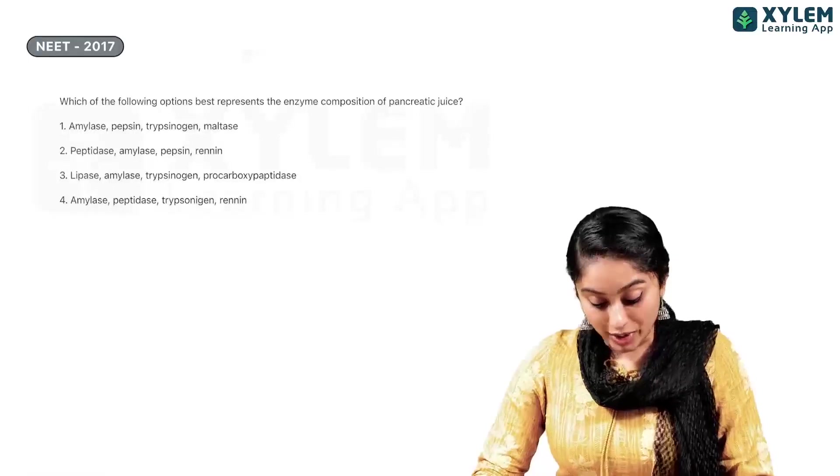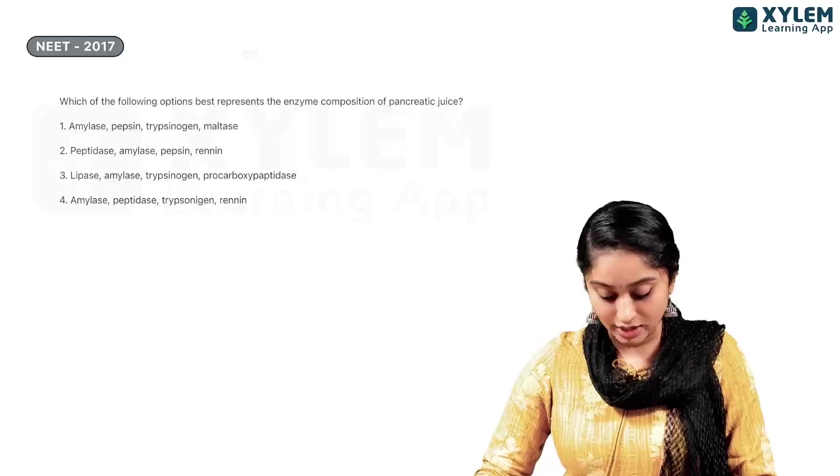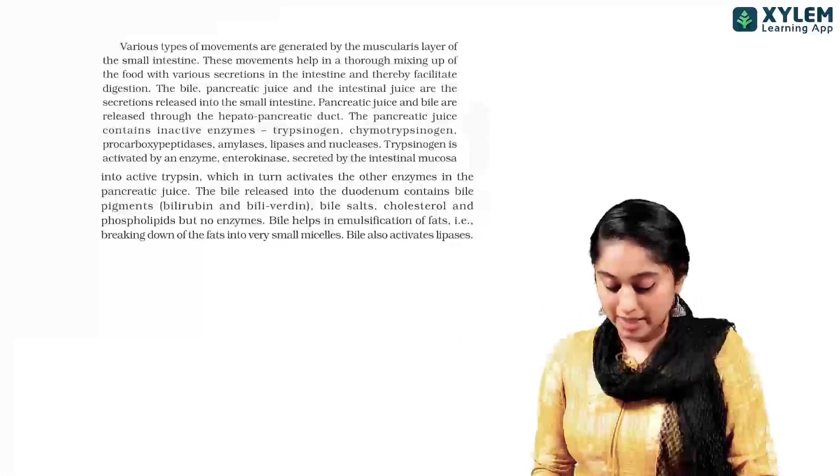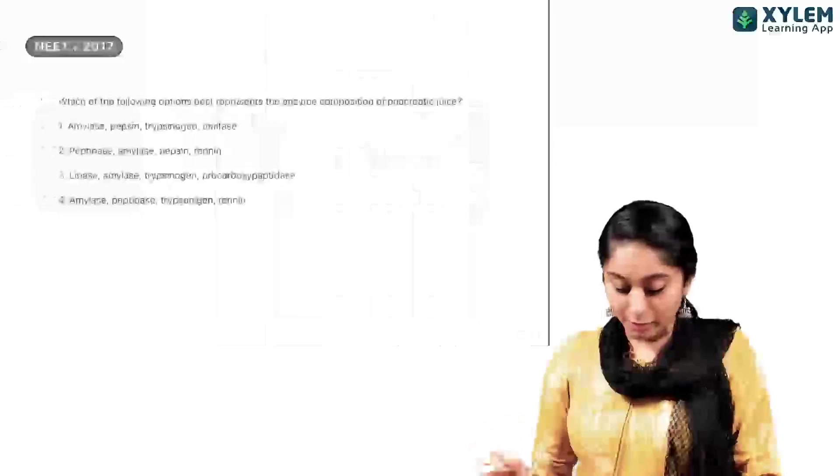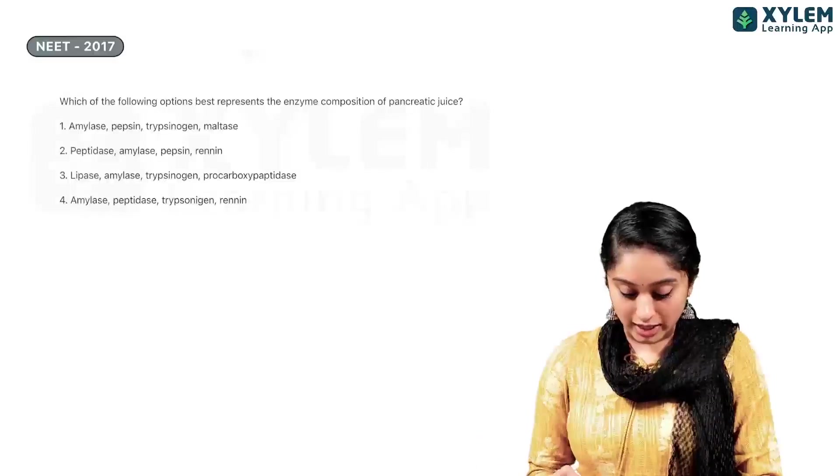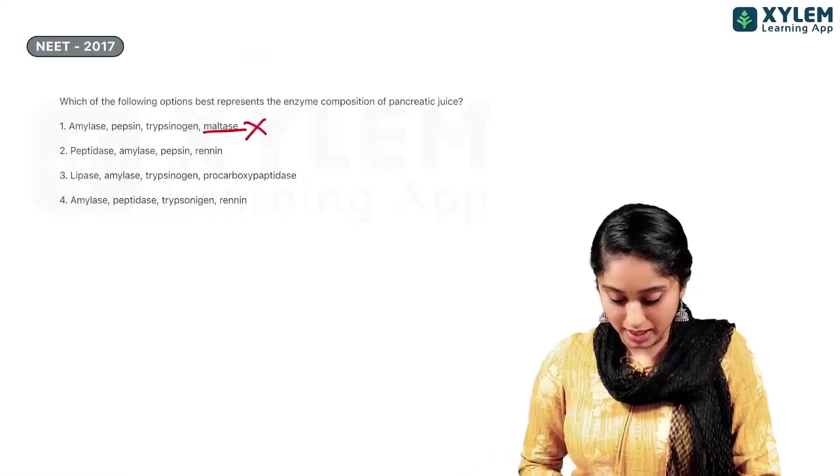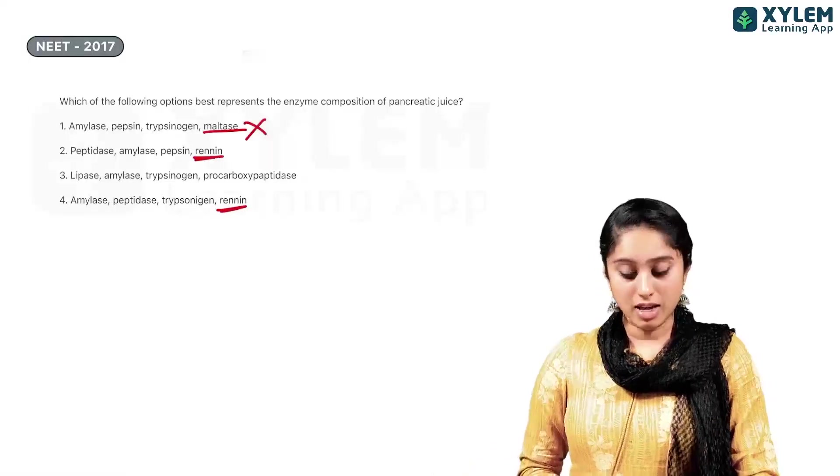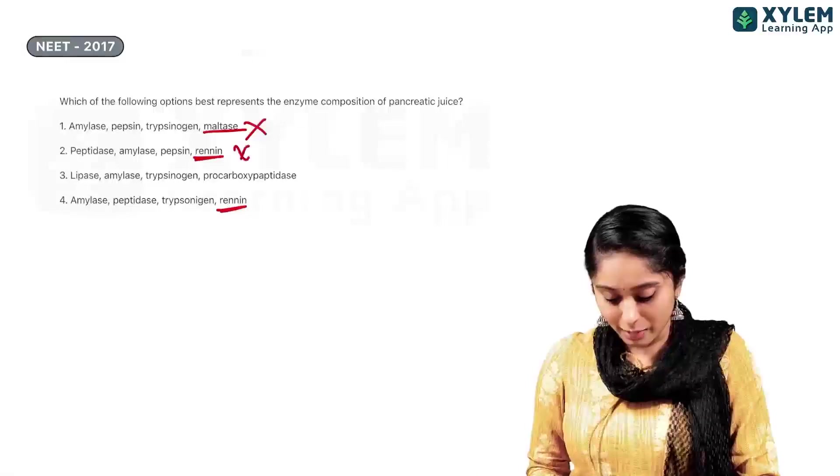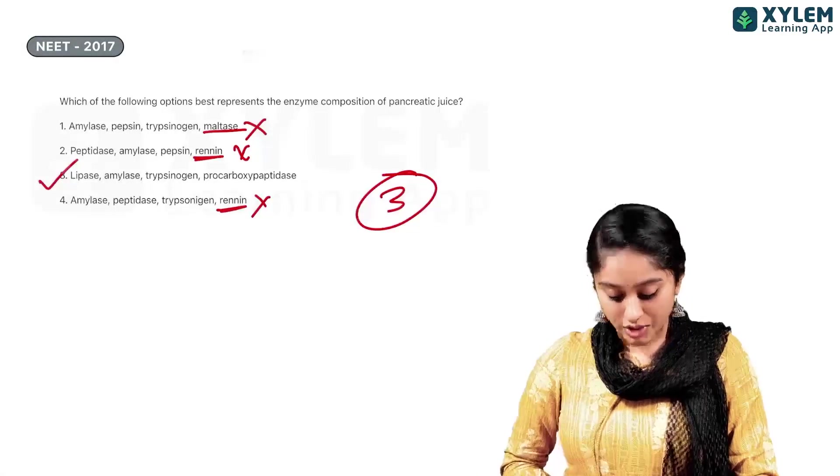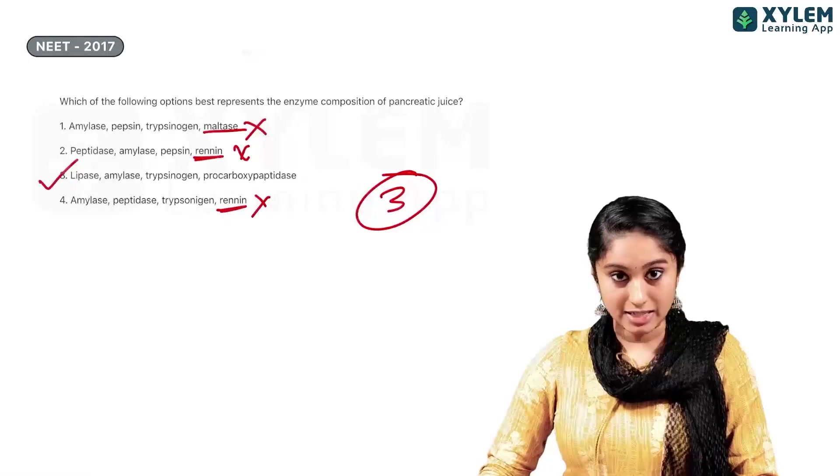Okay. Now, 2017, the question is, which of the following options best represents the enzyme composition of pancreatic juice? This is, again, clearly, we have NCERT, all the list of enzymes in the pancreatic juice. Now, we see, first option, we have maltase. Maltase is not part of the pancreatic juice. So, that can be eliminated. Then, we have rennin. Now, previous question showed that rennin is part of the gastric juice. So, that is also not part of the pancreatic juice. Our option will be option 3, which is lipase, amylase, trypsinogen, and procarboxypeptidase.